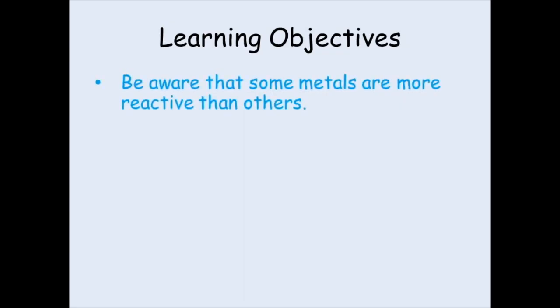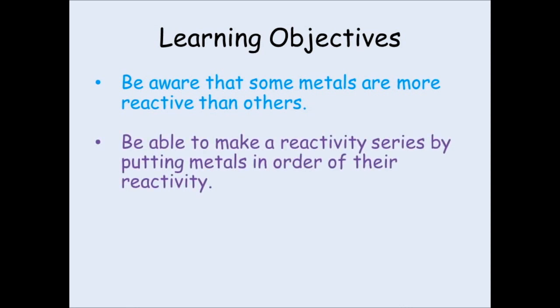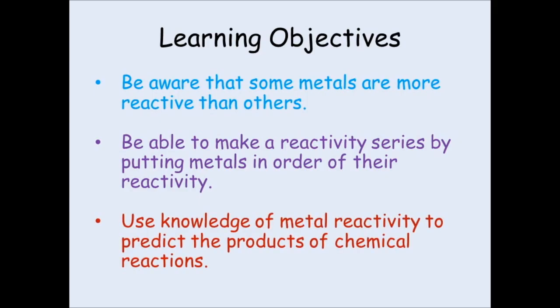Hopefully you should now be aware that some metals are more reactive than others. You should be able to make a reactivity series by putting metals in order of their reactivity, going from least reactive at the bottom to most reactive at the top. And you should be able to predict the products of chemical reactions using your reactivity series. Don't forget to fill in the homework sheet so I know you have watched this presentation.